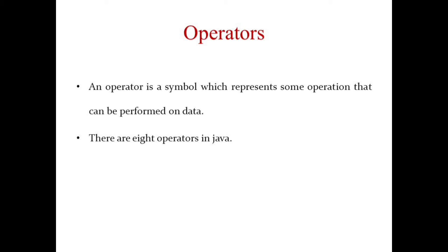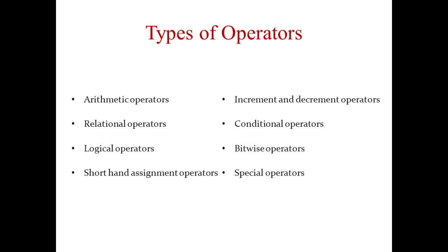An operator is a symbol which represents some operation that can be performed on data. There are eight types of operators in Java: arithmetic operators, relational operators, logical operators, increment operators, conditional operators, bitwise operators, shorthand assignment operators, and special operators.